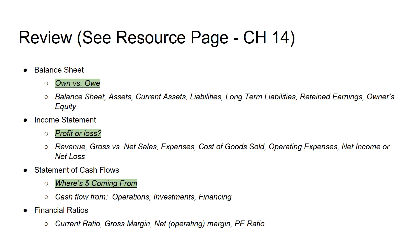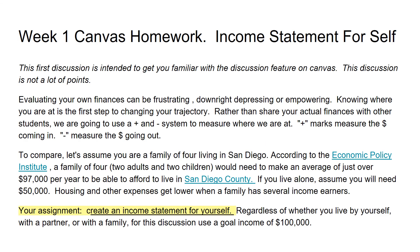That recaps the accounting chapter. To review: the balance sheet is what you own versus what you owe; the income statement is whether you're making or losing money (profit or loss); the statement of cash flows shows where your money is coming from — operations, investments, or financing. Then there are the financial ratios companies use to evaluate financial health: current ratio, gross margins, and PE ratio.